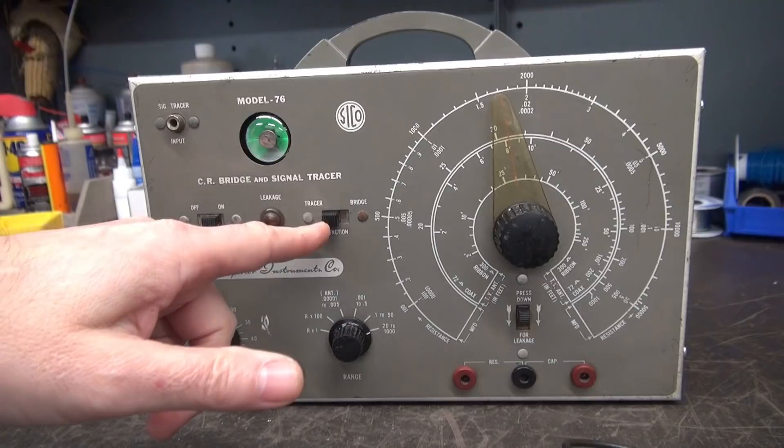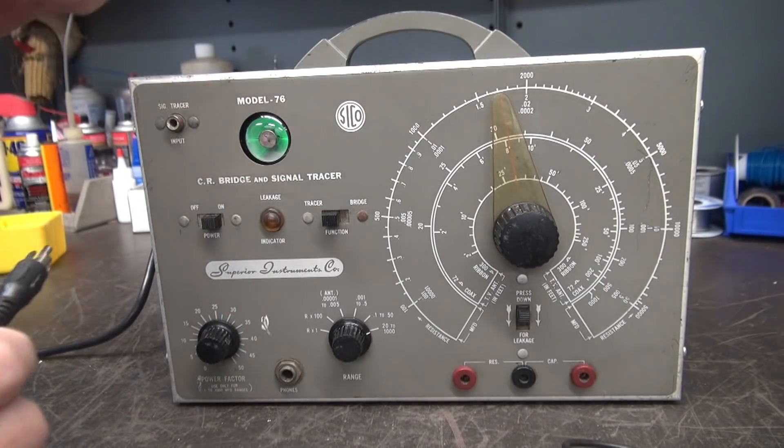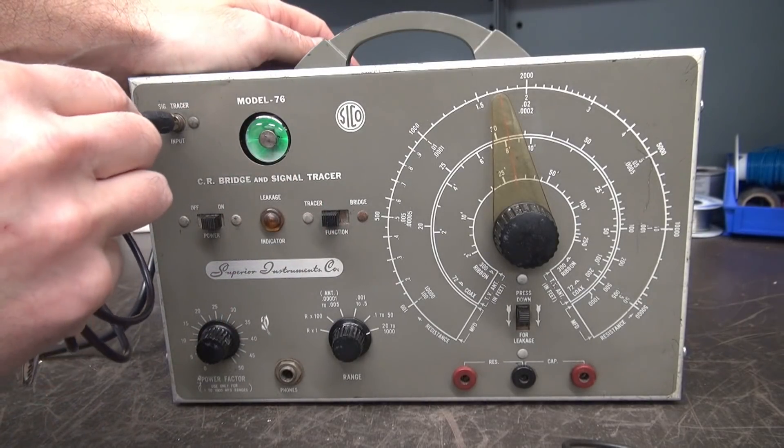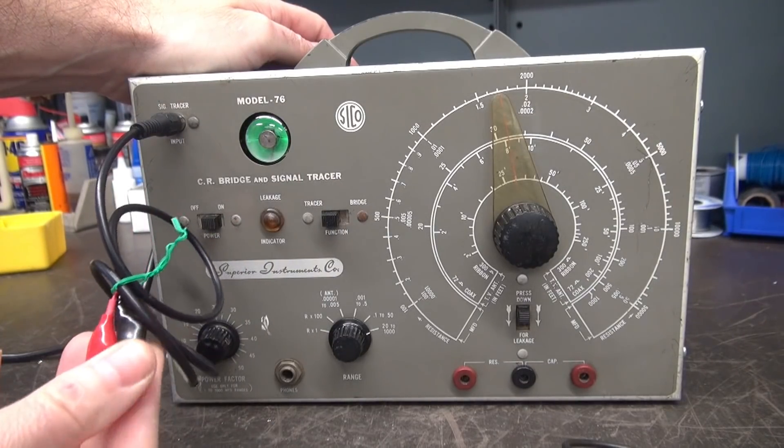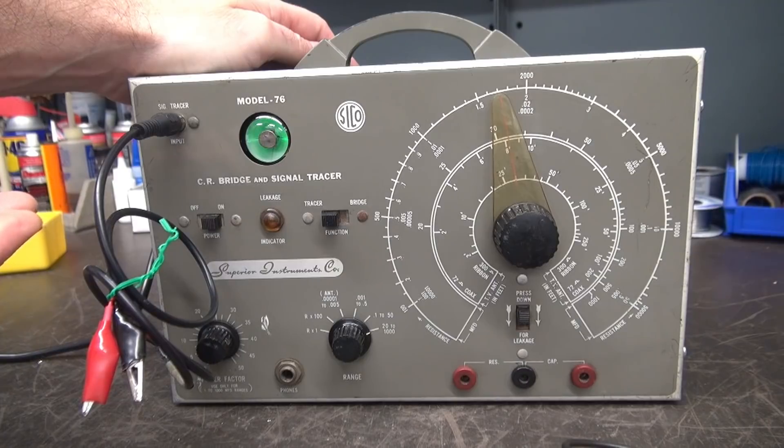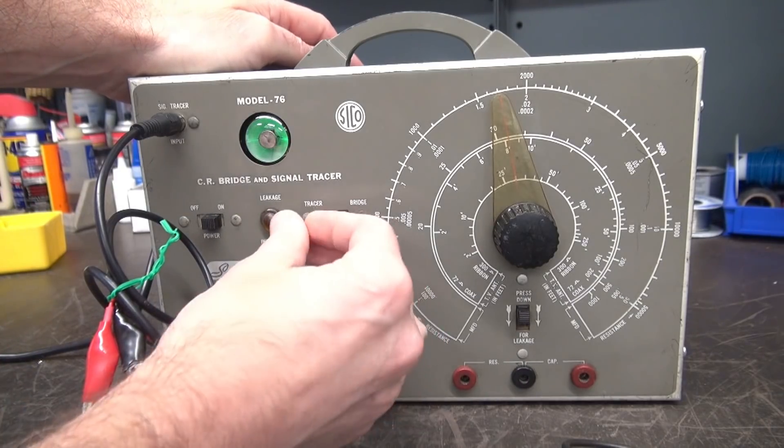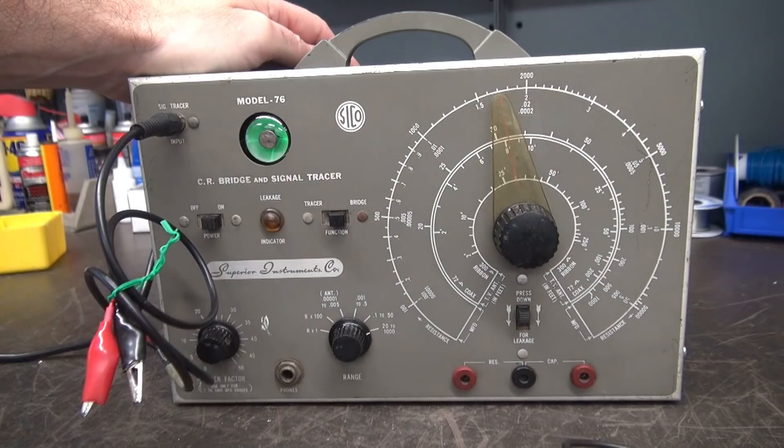All right. It also has this tracer function. You can see the eyes open. When I plug in the lead, it goes nutso. So, somehow, you use that to signal trace in old radios, I would assume. But the most value in this instrument is the bridge.